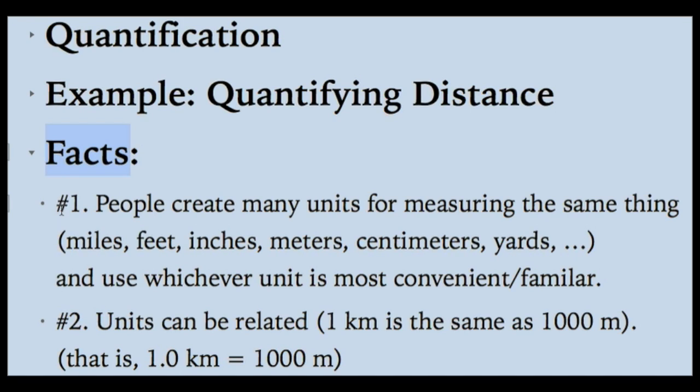So, some facts about quantification. Number one, people create many different units for measuring the same thing. So, for distance, people use miles sometimes. Sometimes they use feet, inches, meters, centimeters, yards. And people always use whatever unit is the most convenient or familiar to them. The second key fact is that units can be related. One kilometer is the same as 1,000 meters. And we can write this using the equal sign. 1.0 km equals 1,000 m. One kilometer is the same as 1,000 meters.